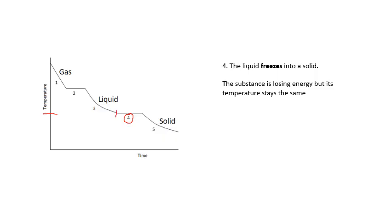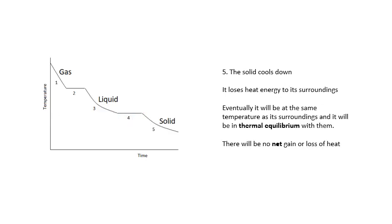Again, as it's changing into a solid, the temperature stays the same. It's still losing energy, but the temperature stays the same. When we get to all of it being solid, then the solid cools down. The solid is just losing heat energy to its surroundings until it gets to the same temperature as its surroundings, and then it will reach thermal equilibrium. When it's in thermal equilibrium with its surroundings, there will be no net gain or loss of heat.